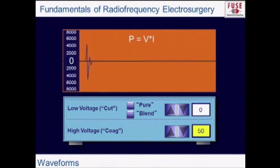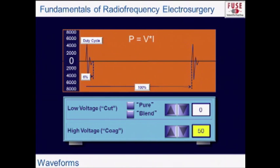The so-called coagulation output is very different — it has a very short duty cycle, only on about 6% of the time in a typical output. Because current is so reduced, voltage must be pushed very high. The key difference between coagulation and cutting at the same wattage is voltage: coagulation output has much higher voltage. This has important implications for pacemaker interference, capacitive coupling risks, and damage to insulation on your instruments.